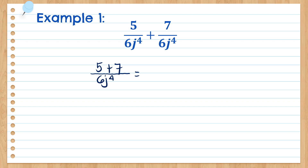Step number two, combine like terms. Are they like terms? Yes, because they are both constants. So 5 plus 7 is 12, all over 6J to the 4th. Now, is there a common factor among the numerator and denominator? We have 12 and 6, which are both divisible by 6. So we can cancel this out. 12 divided by 6 is 2, and 6 divided by 6 is 1. The final answer for example number one is 2 all over J to the 4th power.